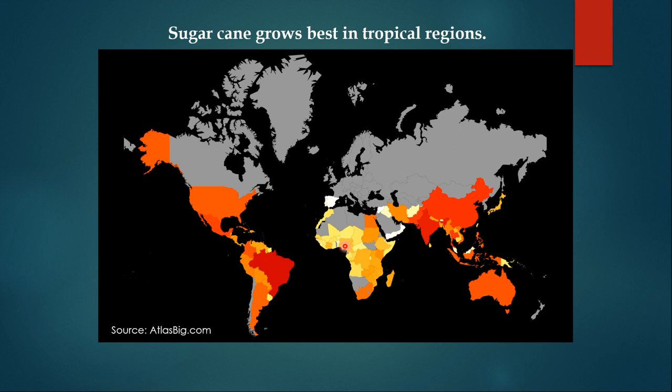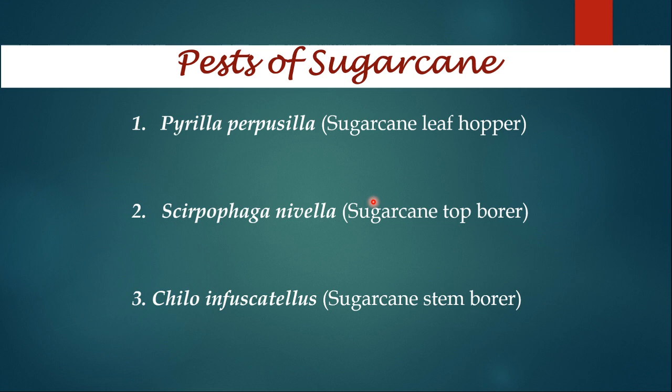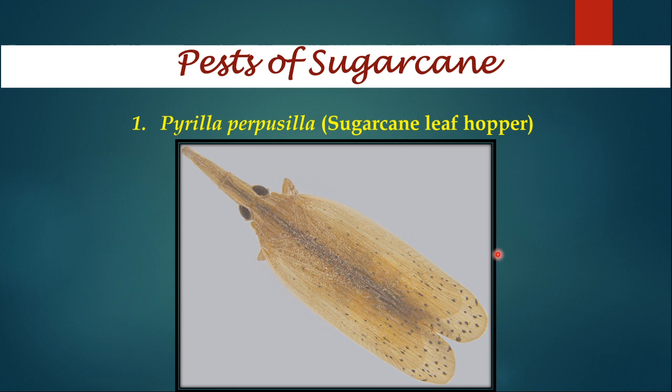Here is the distribution map of sugarcane. This crop is cultivated in many countries and India is one of the major producers. This map should give you an idea about the importance of sugarcane in agricultural economy. In this series, I will talk about three pests of sugarcane: sugarcane leafhopper, sugarcane top borer, and sugarcane stem borer.